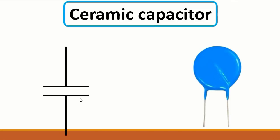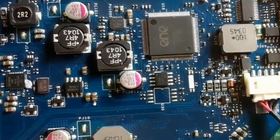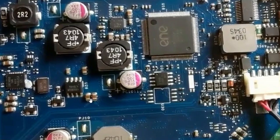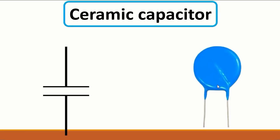Then we have the ceramic capacitor. This is the symbol for a ceramic capacitor. It could be a through-hole ceramic capacitor or this kind of capacitor. These are ceramic capacitors, sometimes called pF capacitors — picofarad capacitors — because their value is usually in picofarads. You find SMD ceramic capacitors in motherboards, and THT ceramic capacitors in switch mode power supplies.